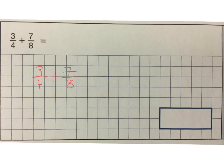So I have to make the denominator the same or find a common denominator. I can turn quarters into eighths very easily by doubling. So 3 quarters is equivalent to 6 eighths.